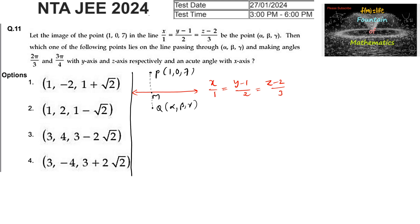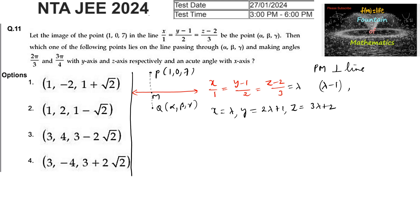M is the point lying on the line and the line PM is perpendicular to the given line. Let us consider a general point on the line by taking the parameter λ: x = λ, y − 1 = 2λ so y = 2λ + 1, and z = 3λ + 2. The direction ratios of the line joining P and M can be taken as (λ − 1), (2λ + 1), and (3λ − 5).